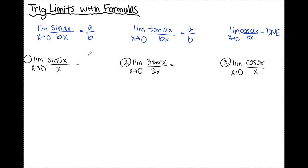For number one, I have the limit as x approaches 0 of sine of 5x over x. I can see that my a value is 5 and the b value is the coefficient of x, which is 1. So my limit here is equal to 5 over 1, which is just 5.